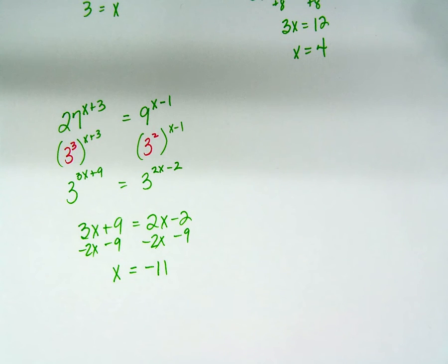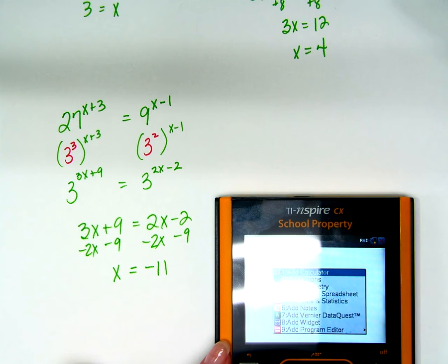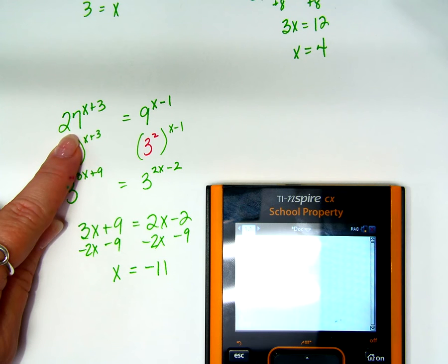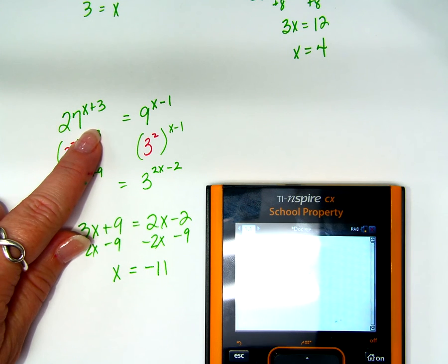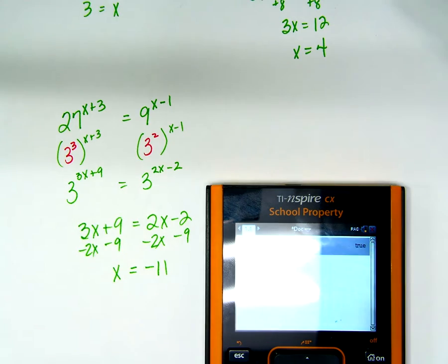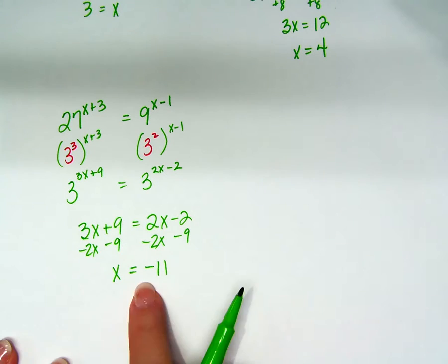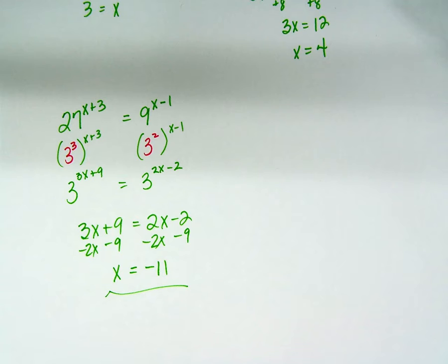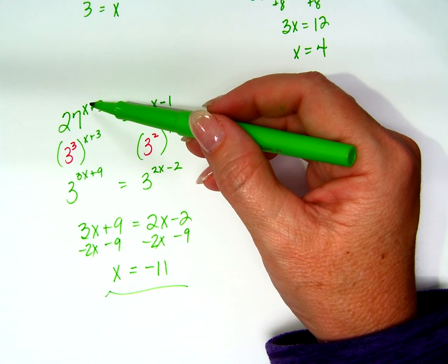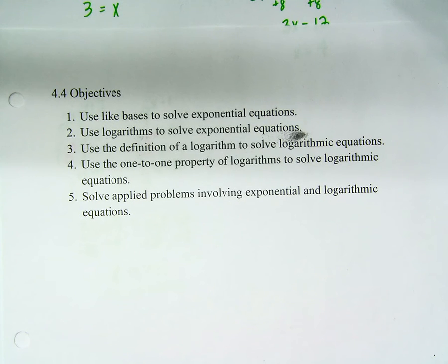Well, is that right? People always freak out when we get negative answers. Can't I check it in my calculator? Open a new calculator document. We say 27 raised to the negative 11 plus 3 power equals 9 raised to the negative 11 minus 1 power, and hit enter. Look what it says: it says true. That's the right answer. I don't have to care what 27 to the negative 8th power is — it's just good enough to know that these two are equal. The calculator told me it was true. So that's using like bases to solve exponential equations.